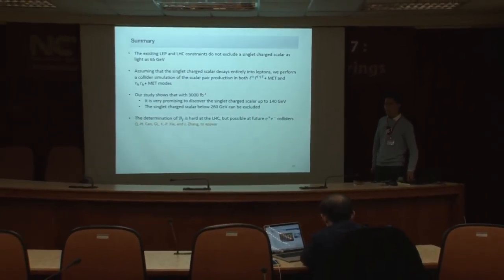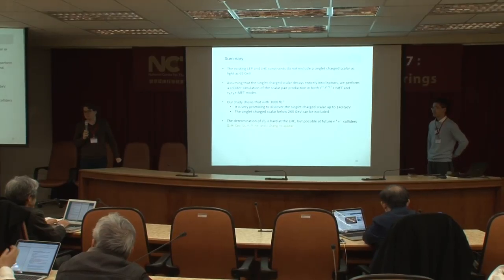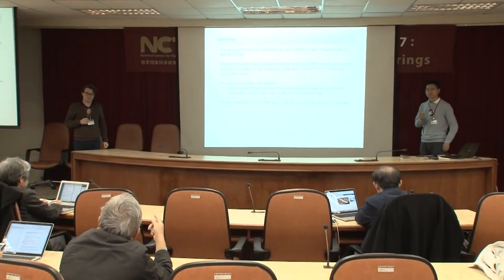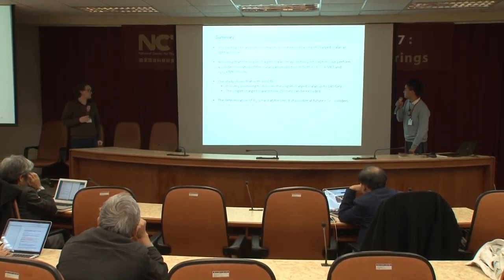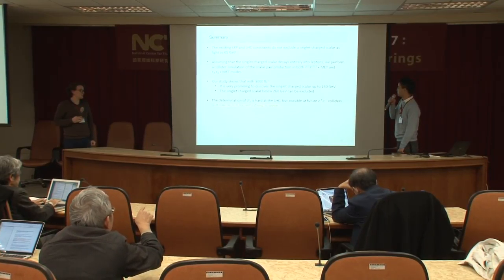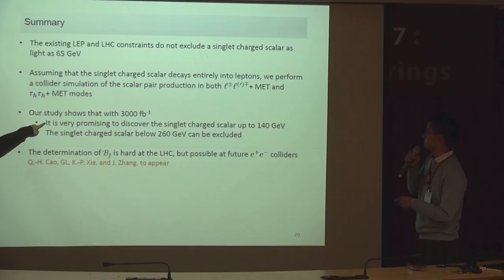Thank you. Are there any questions? I'm just wondering, the last two sentences, so you could discover up to 140 GeV, exclude the 260 GeV light, they are different, or what's the reason? What's the relation of the two sentences? So you can discover up to 140, but then you can exclude 260 GeV, two different numbers. The number of signals. This is two sigma exclusion, and this is a five sigma discovery. Oh, okay. So not at the same confidence level. Yes.